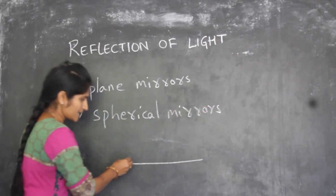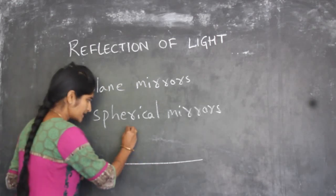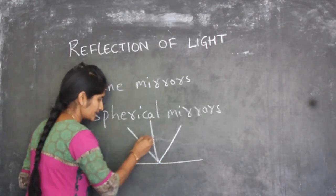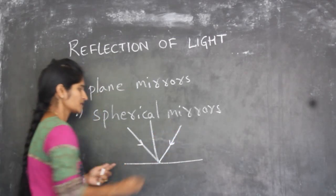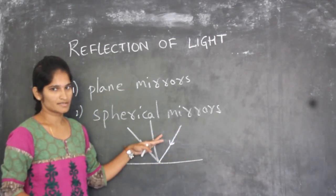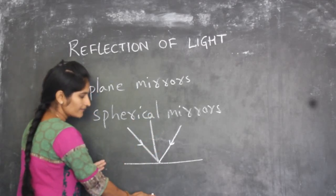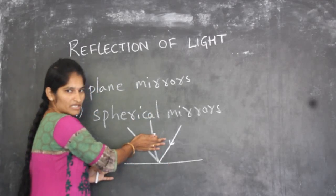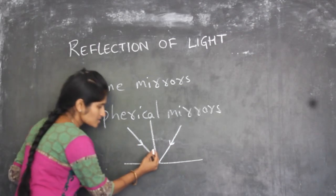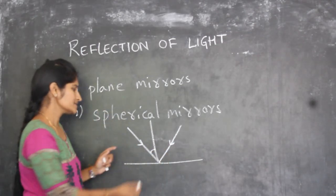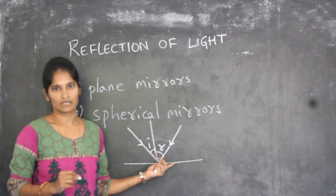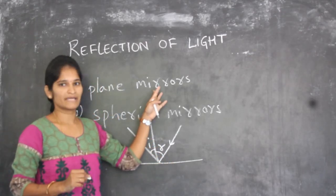Suppose if we take this as a mirror, the incident ray, the normal, as well as the reflected ray — these three will lie in the same plane, that is the plane of reflection. So the reflection is present here and all these lie in the same plane. The second law is the angle of incidence and angle of reflection are equal. This is about plane mirrors.